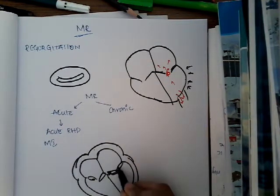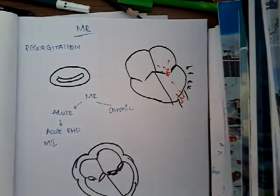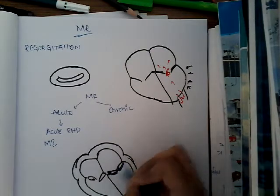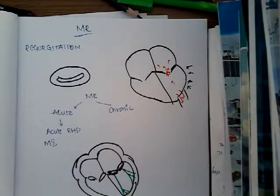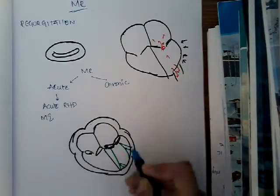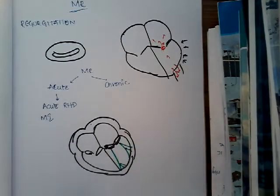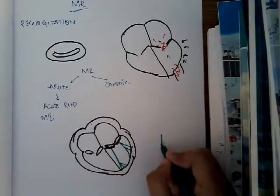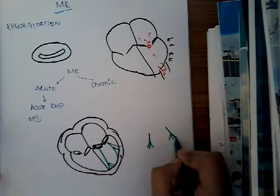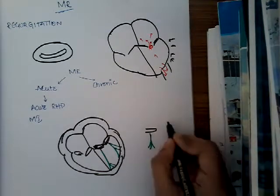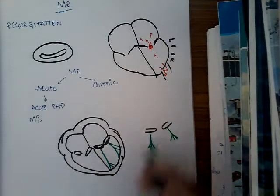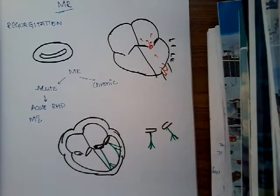In rheumatic heart disease, the mitral valve is attached to the walls of the ventricles by chordae tendineae. In rheumatic heart disease, these chordae tendineae become shrunken and fibrosed. When the chordae tendineae are shrunken and fibrosed, they cannot help in closing the valves properly, resulting in a gap — this is the inability to close the valve due to shrunken chordae tendineae.